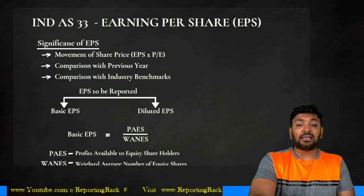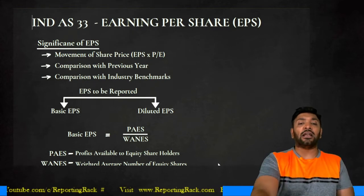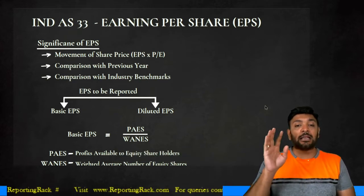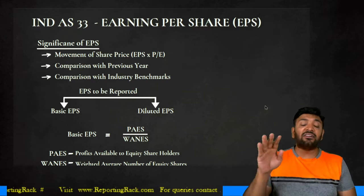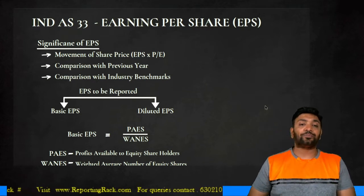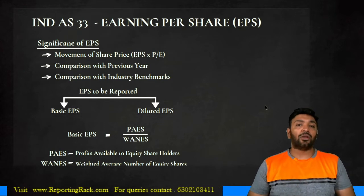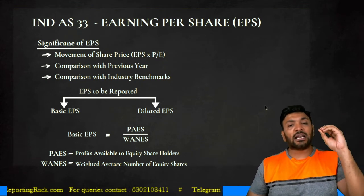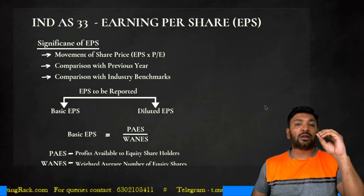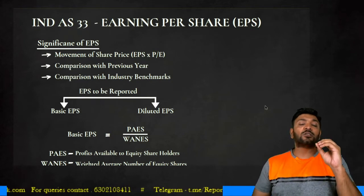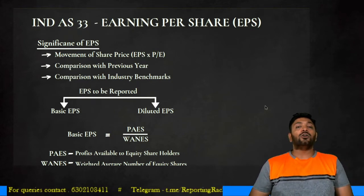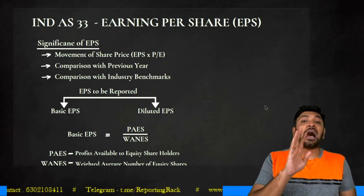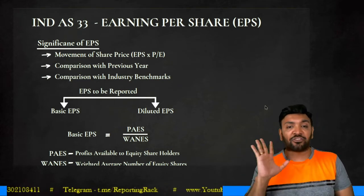That is predominantly why EPS is very important. We determine basic EPS with the simple formula: profits available to equity shareholders (PAS) divided by weighted average number of equity shares (WANES). Let's break this down — numerator part separate, denominator part separate. The numerator is profits available to equity shareholders: how do we determine this?